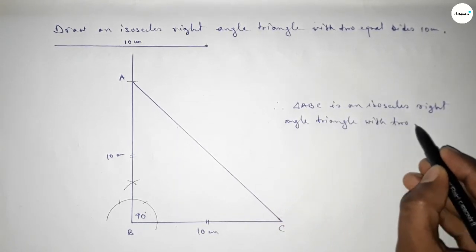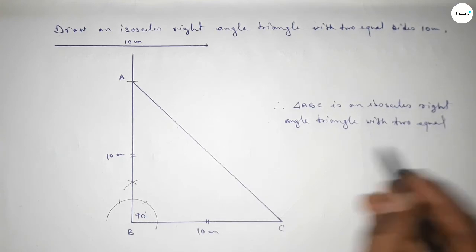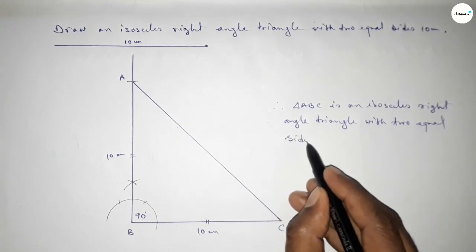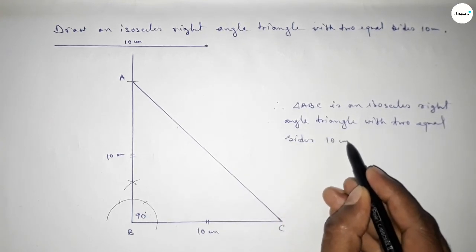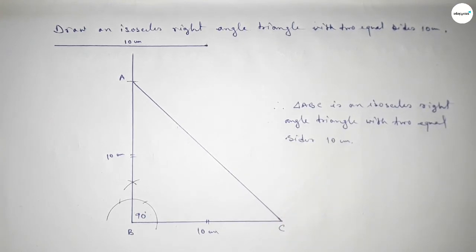So this is the process to construct an isosceles right angle triangle with two equal sides of 10 centimeter. Thanks for watching — if this video is helpful to you, please share it.